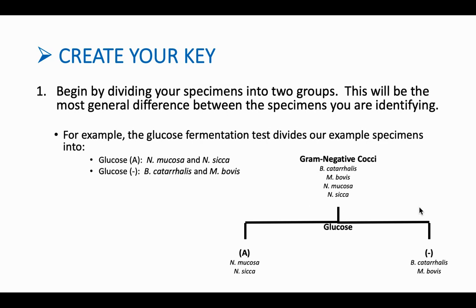We had four gram-negative cocci. To actually start drawing it out in our flowchart, we want to write out our four organisms and write the first test. The first differentiating test was our glucose fermentation test. We knew that two were positive and two were negative, so we write the test here in the middle of the flowchart.